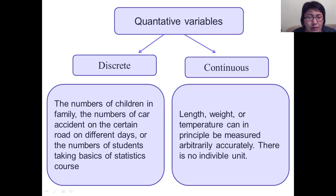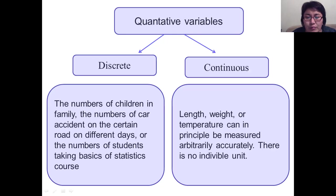Continuous variables are quantities such as length, weight, or temperature that can in principle be measured arbitrarily accurately. There is no fixed individual unit — weight may be measured to the nearest gram, but it could be measured more accurately, say to the tenth of a gram. Such a variable is called continuous and is different from a discrete variable.